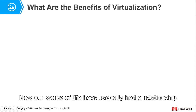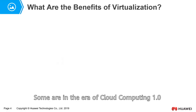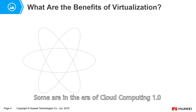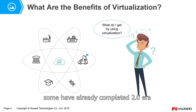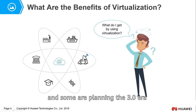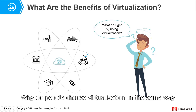Now, all walks of life have basically had a relationship with cloud computing. Some are in the era of cloud computing 1.0, some have already completed the 2.0 era, and some are planning the 3.0 era. No matter which era, everyone basically started from virtualization. Why do people choose virtualization in the same way?